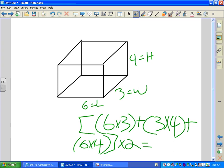And that will give you 108 units squared. That is how you find the surface area of a rectangular prism.